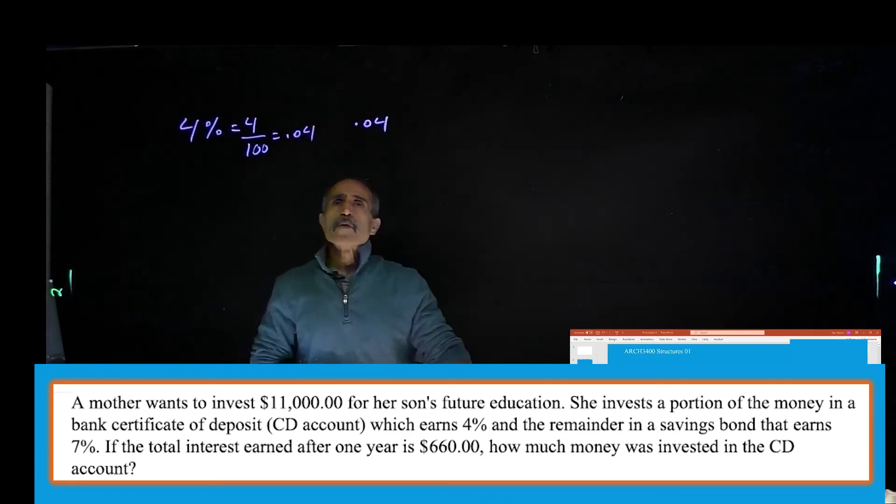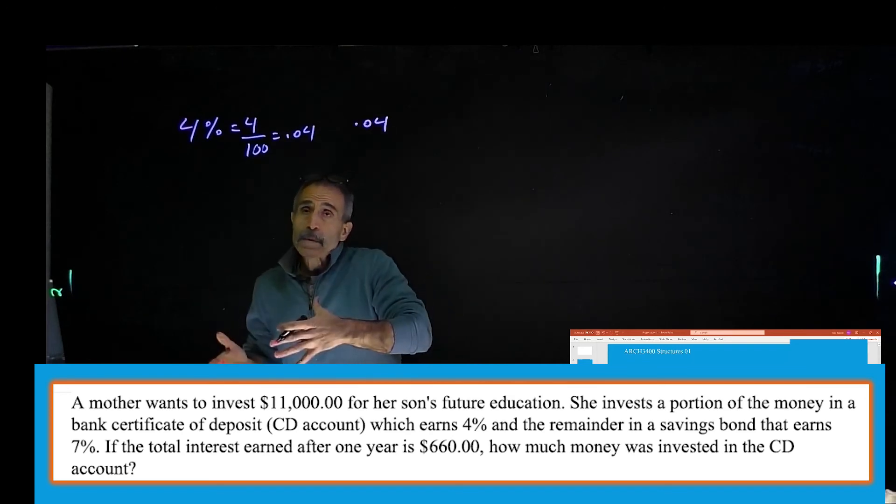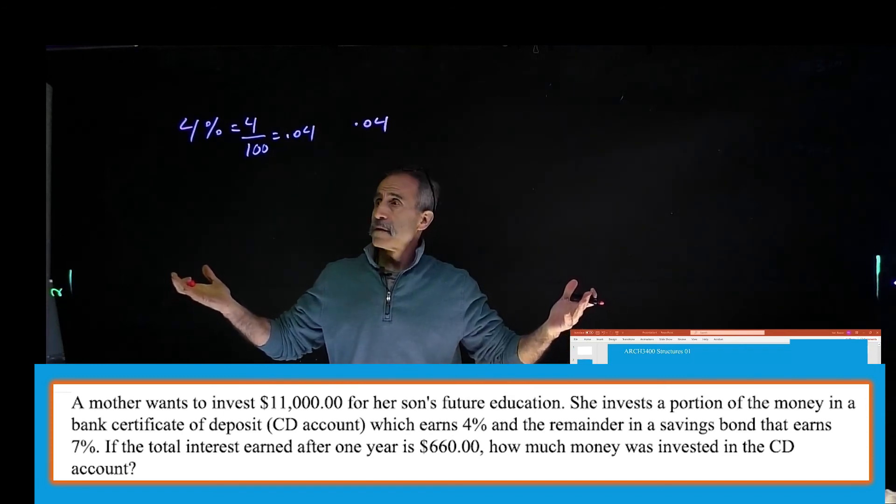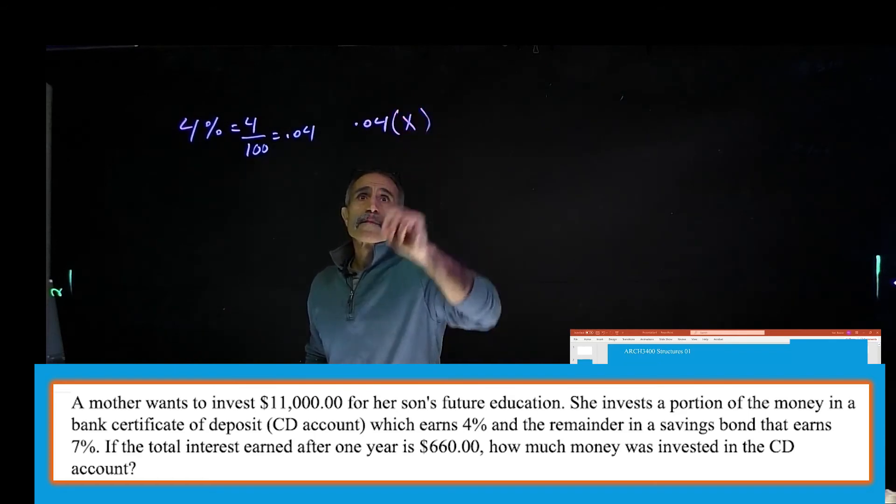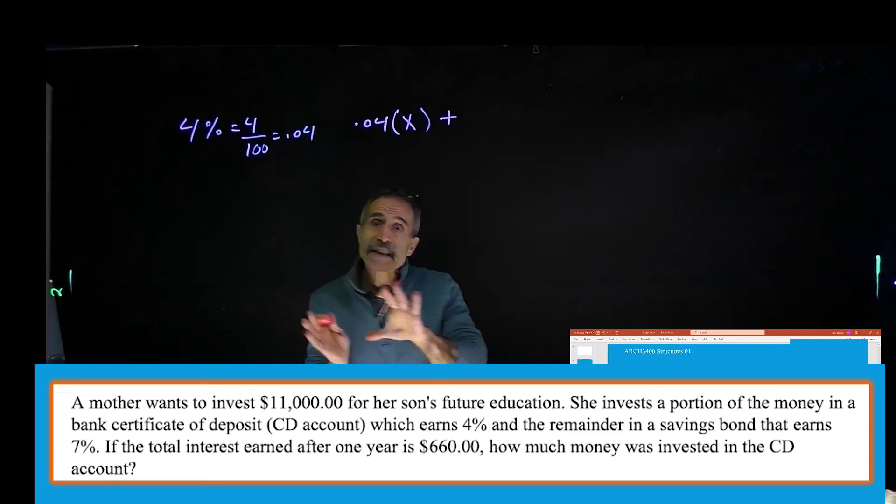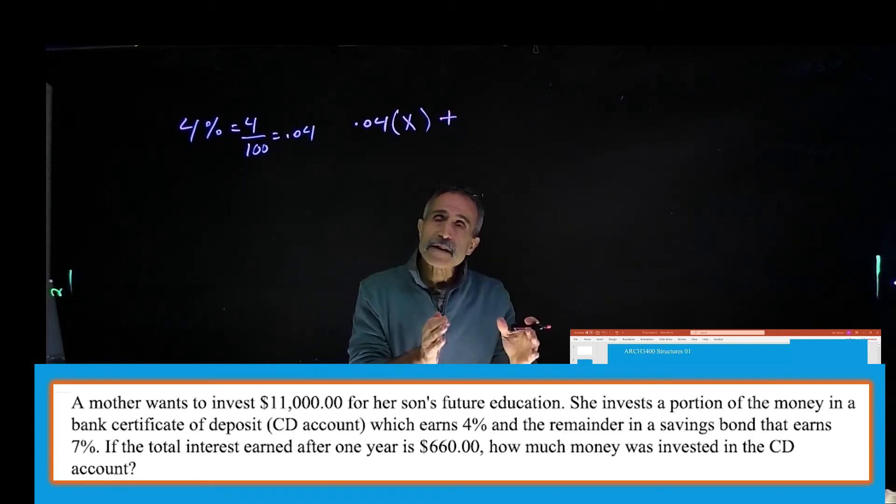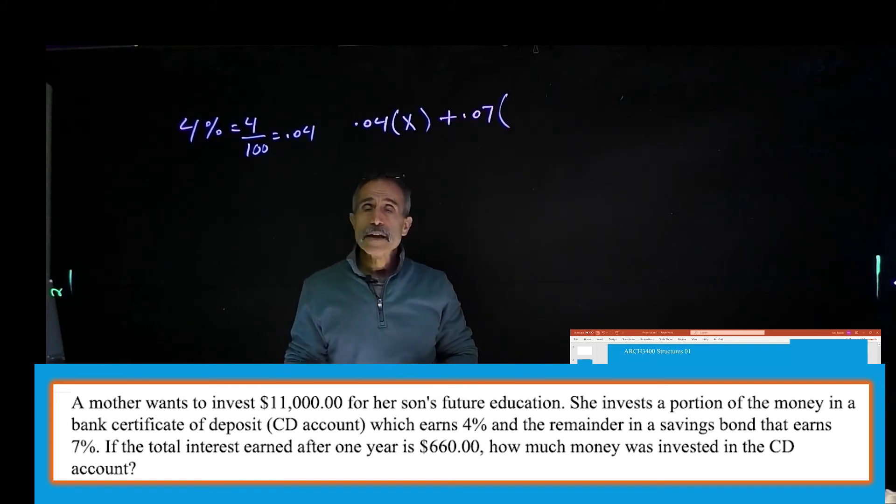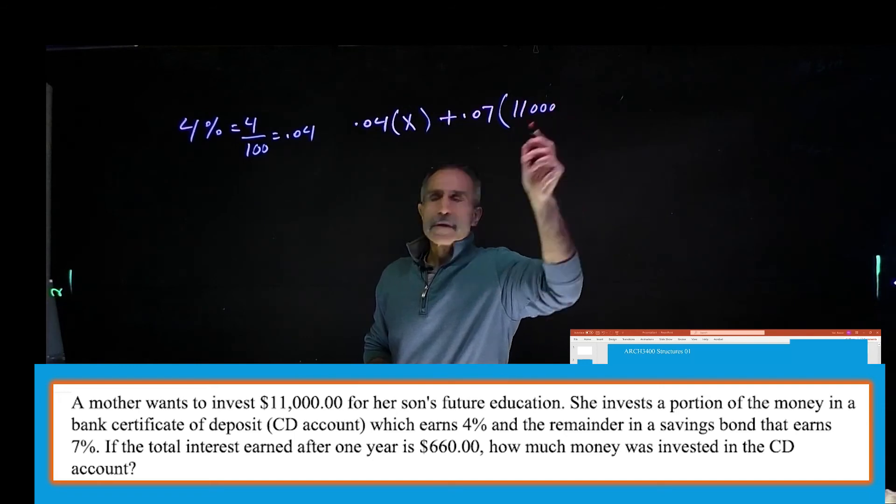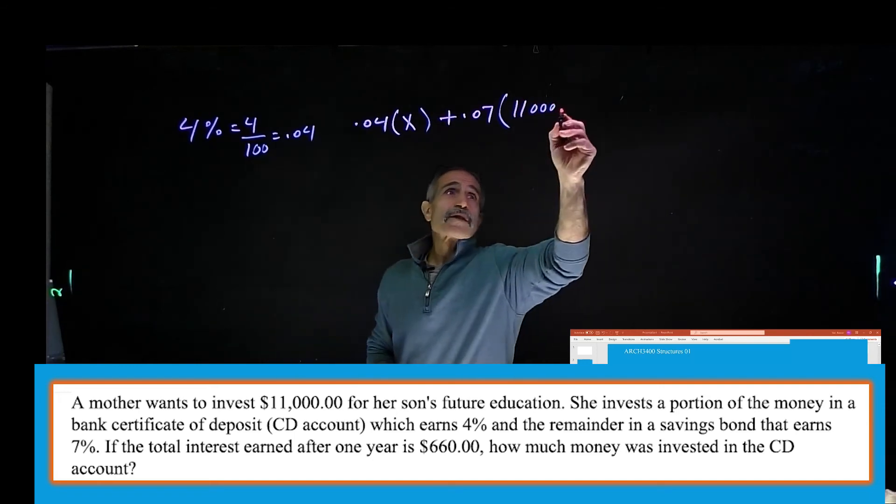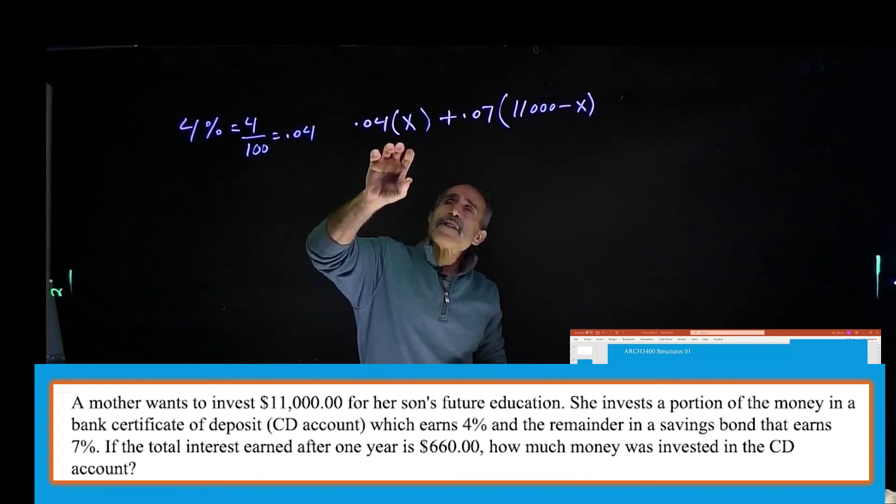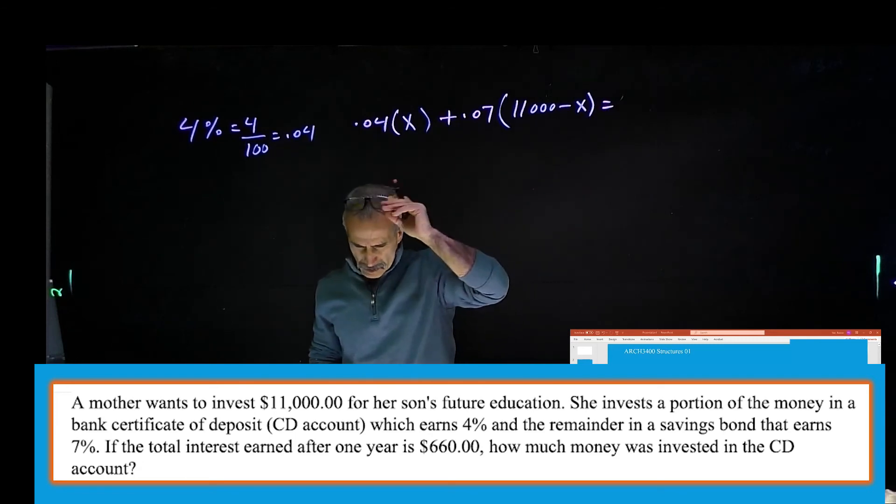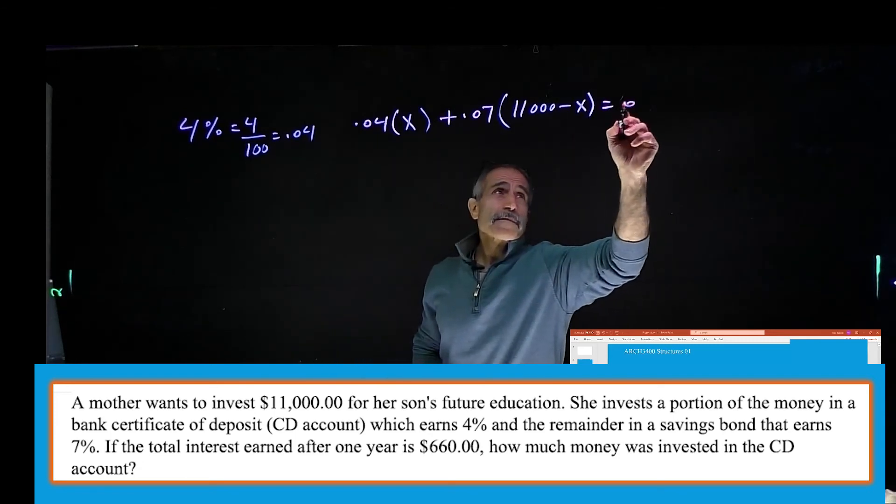So 0.04 times X, invest some of it at 4%. How much? I don't know, nobody knows, so we call it X. And then plus they're going to invest rest of it at 7%, 0.07, which is 7% rest of it. How much is rest of it? I know it's 11,000 minus X. Because if I'm investing a little bit here, the rest of it will be 11,000 minus that. And the whole interest of this came out to be 660.